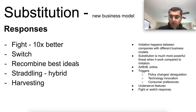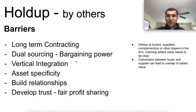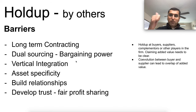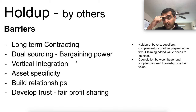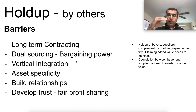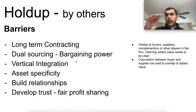There's only one way to fight substitution: make your product 10x better, or switch yourself by harvesting. Hold-up is when you're held up by others — your suppliers, buyers, complementers, employees, processes — so many things that prevent you from gaining maximum efficiency. For example, General Motors contracted metal stamping parts from a company, but that supplier wasn't willing to invest heavily even with a long-term contract, holding up GM's efficiency.